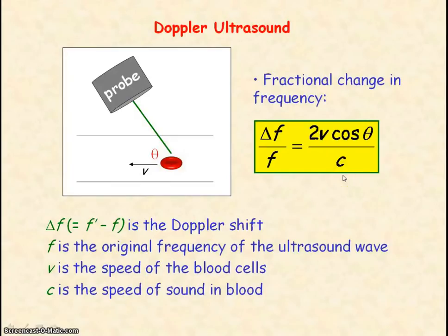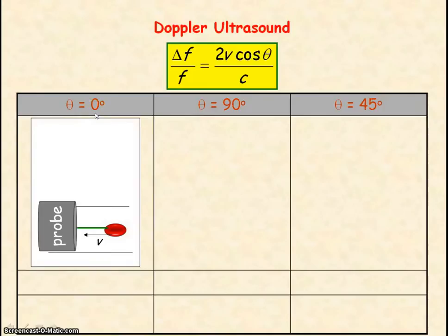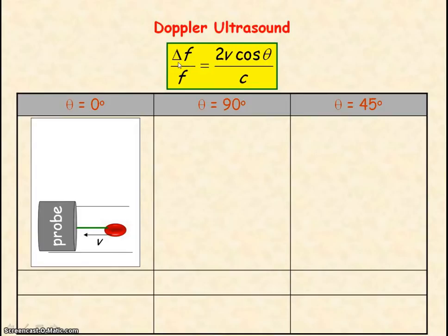When theta equals zero degrees, the direction of the ultrasound wave is parallel to the direction in which the blood cell is moving. Then cos of zero equals one, and so the Doppler shift or the change in frequency will be maximum. However, it's not practical for the probe to be directed so that it's parallel to the blood vessel.